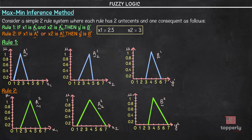I'll explain the max-min inference method with an example. We have a simple two-rule system where each rule has two antecedents and one consequent. Rule 1 is: if x1 is A11 and x2 is A21, then y1 is B1. Rule 2 is: if x1 is A12 or x2 is A22, then y2 is B2. Here x1 and x2 are inputs and y1, y2 are outputs. A11, A21, B1 are the fuzzy sets of Rule 1, and A12, A22, B2 are the fuzzy sets of Rule 2.